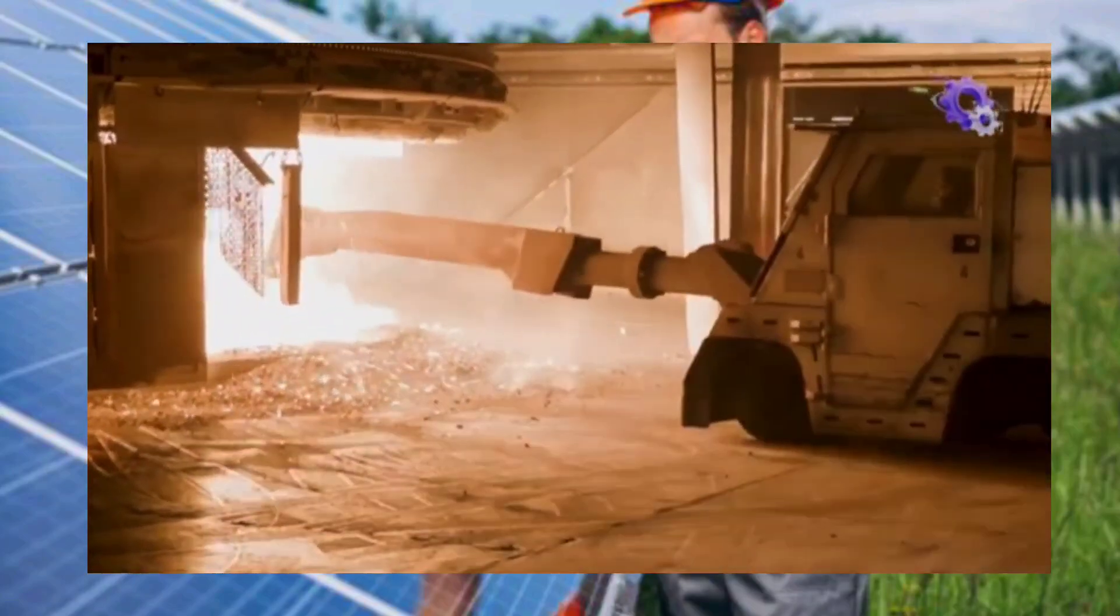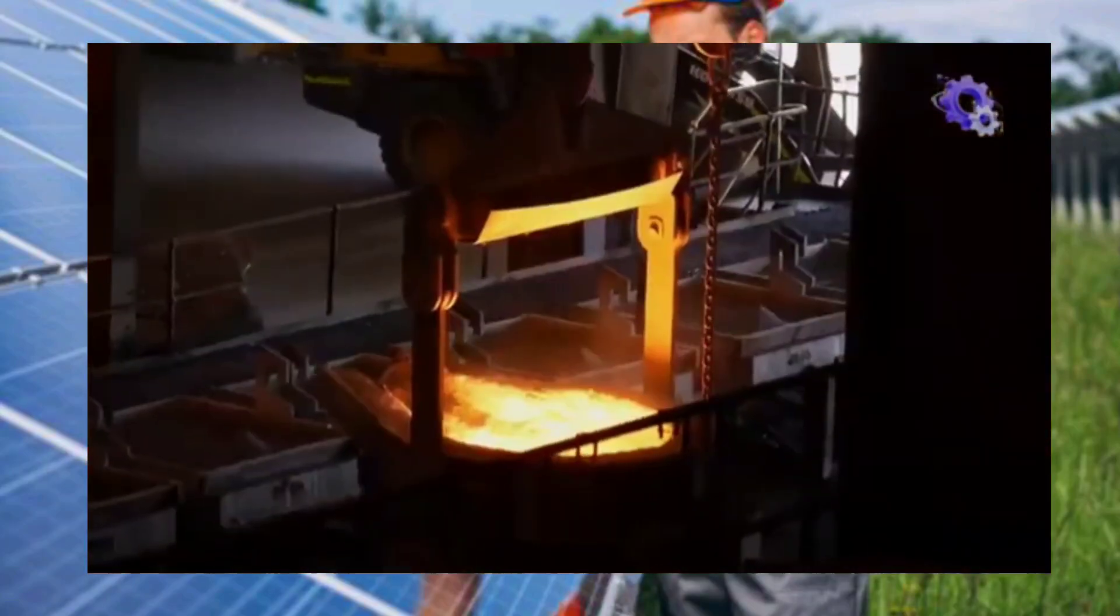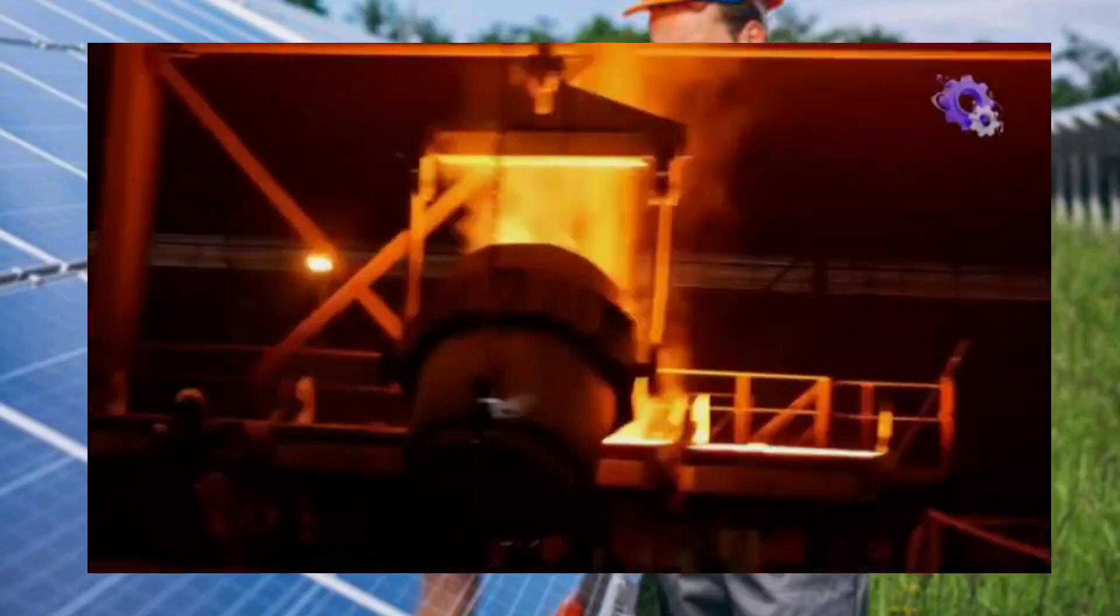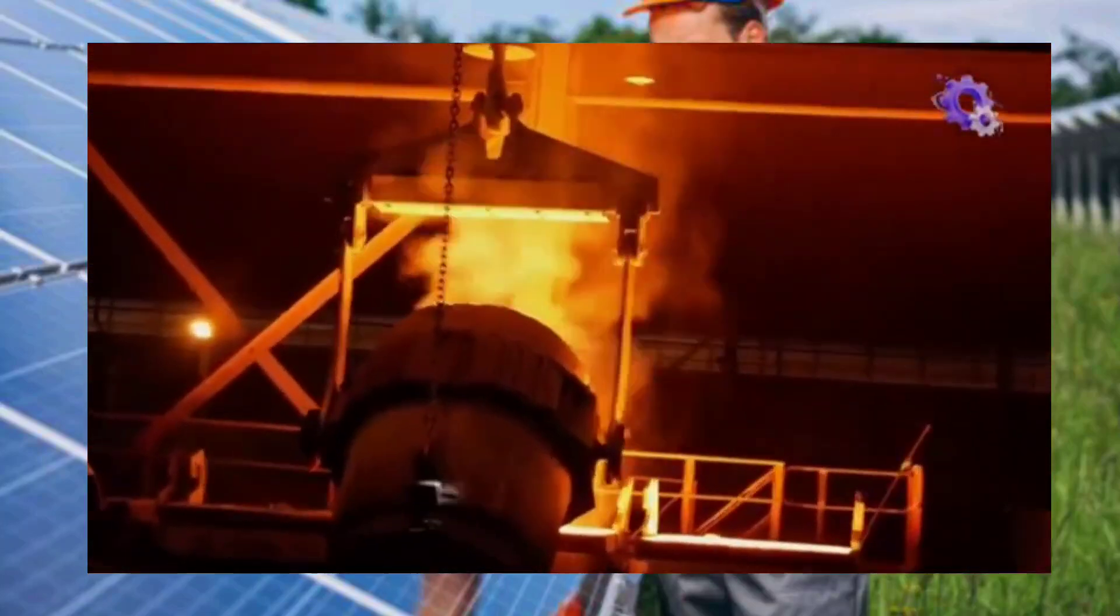Silicon is used to make everything from window glass to the processors in your home computer. And without it, a solar panel just wouldn't work. The purified silicon is melted and formed into ingots, which serve as the raw material for solar wafers.